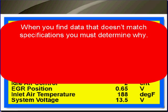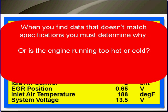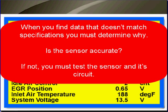When you find data that doesn't match specifications, you must determine why. Is the condition wrong — as in the fuel is running too rich or too lean, causing the oxygen sensors not to read normally? Or is the engine running too hot or too cold, causing the ECT not to be within specifications? You must determine whether the sensor is accurate or if you need to test the sensor and its circuits.